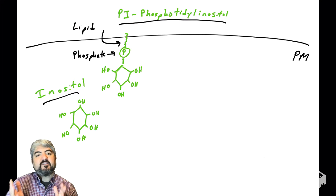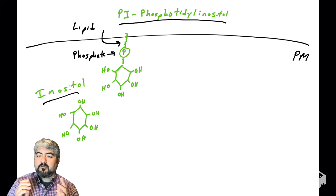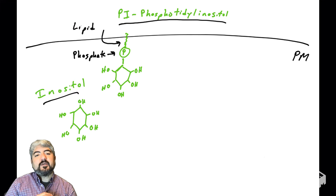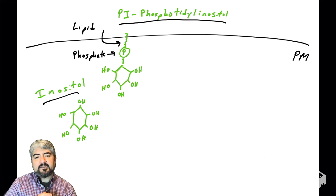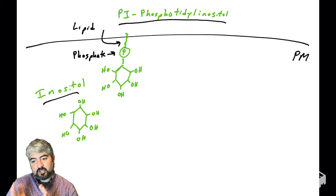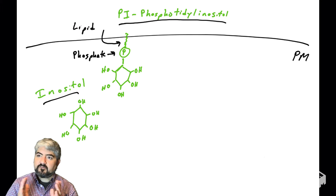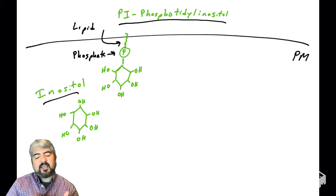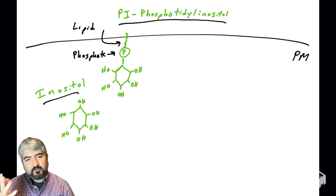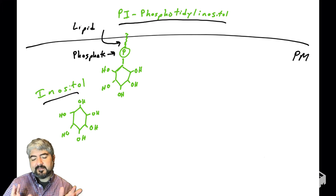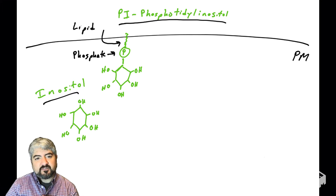This is phosphatidyl inositol, commonly referred to as PI. All it is is a sugar with a phosphate group and a lipid attached to it — that's the simple version. If you want to see the real version, you can Google the actual structure. But for now, we're just going to use that simplified representation.